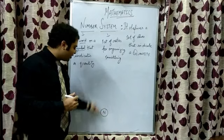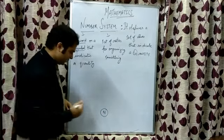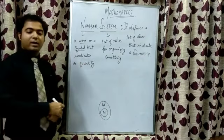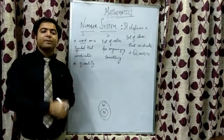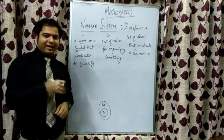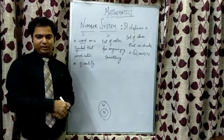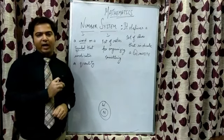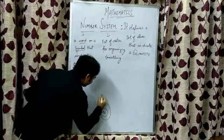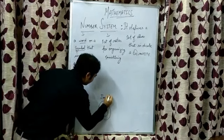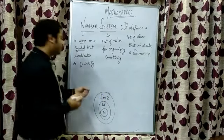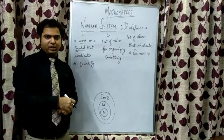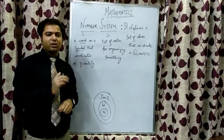If we add 0 to natural numbers, we get whole numbers and they are represented by capital W. The next set of numbers that we learn about is integers, represented by capital I or capital Z. Integers are positive or negative natural numbers including 0, where 0 is neutral.